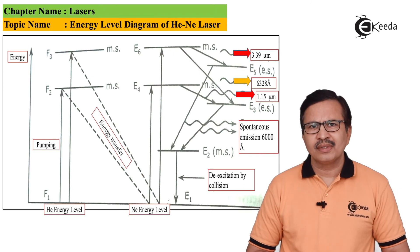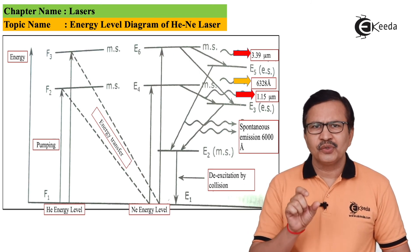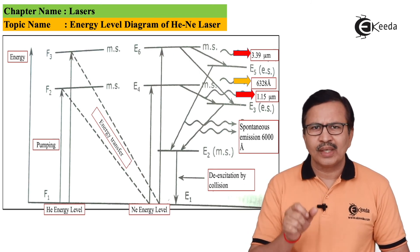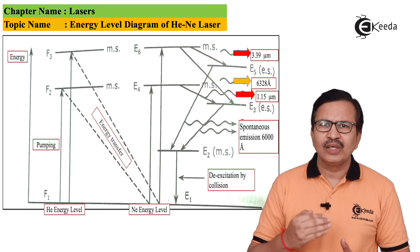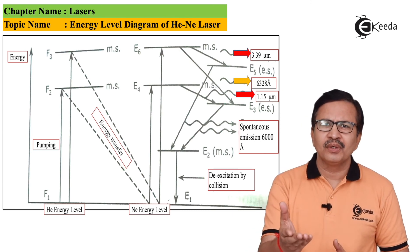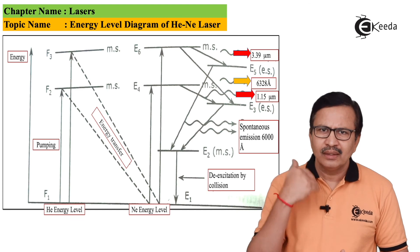The helium to neon ratio is of the order of 10 to 1. Hence, the probability of helium transferring its energy to neon is much more than the reverse.